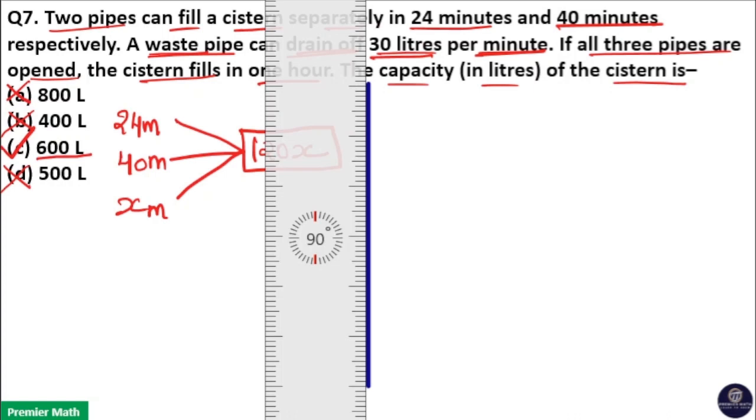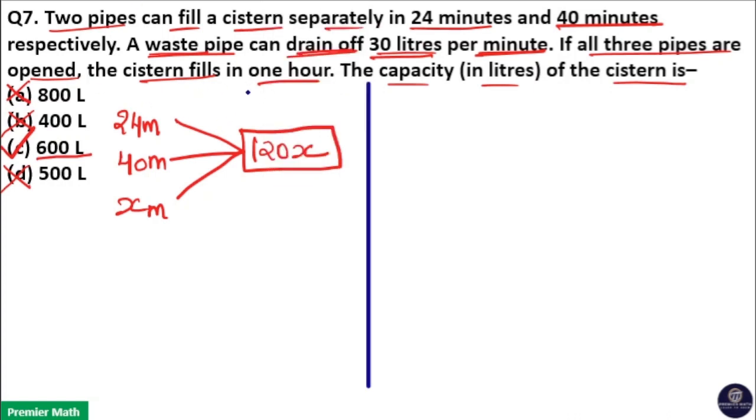Here, the question says if all the pipes are open, it will take 1 hour to fill this tank. So take the time reciprocal of this tank. Here, all these are in minutes, so I will take 1 hour as 60 minutes, 1 by 60.